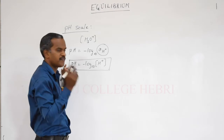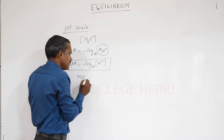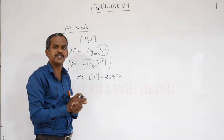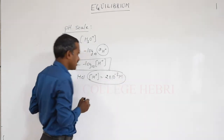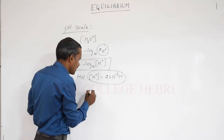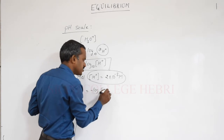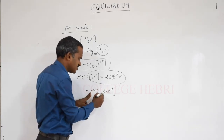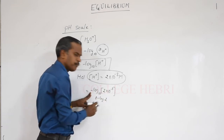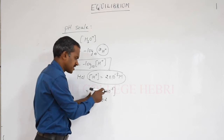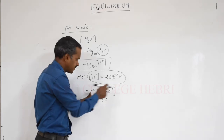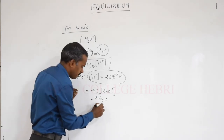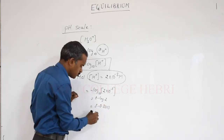For example, if an acid like HCl has a H+ ion concentration of 2×10⁻³ molar, we substitute in the formula: pH = −log₁₀(2×10⁻³). Using log AB = log A + log B, this becomes 3 − log 2. The value of log 2 is 0.3010, so the answer is 2.699. This is how you calculate pH when the hydrogen ion concentration is given directly.